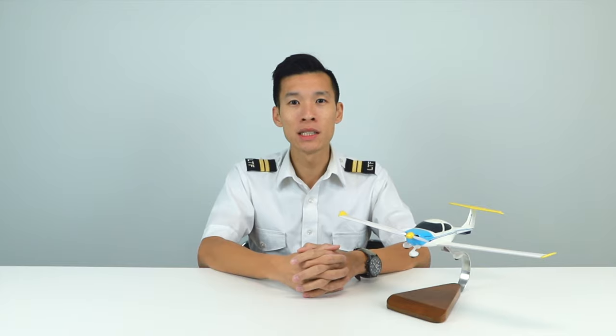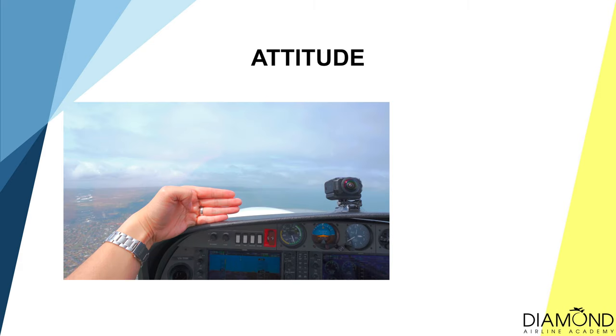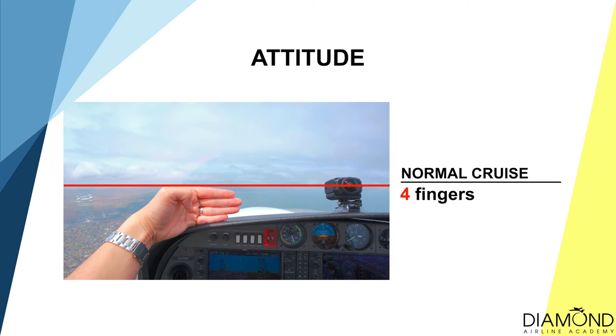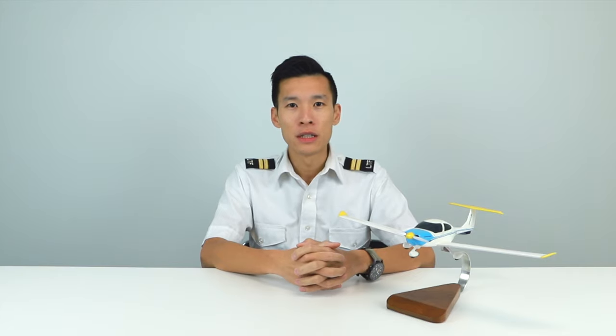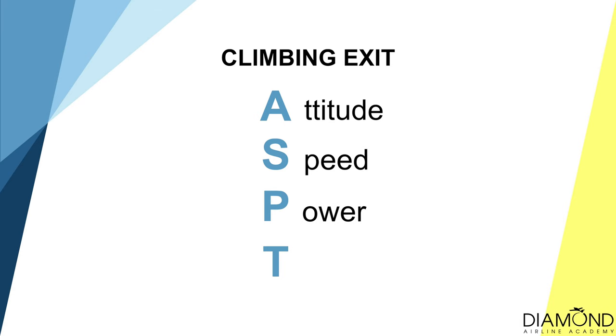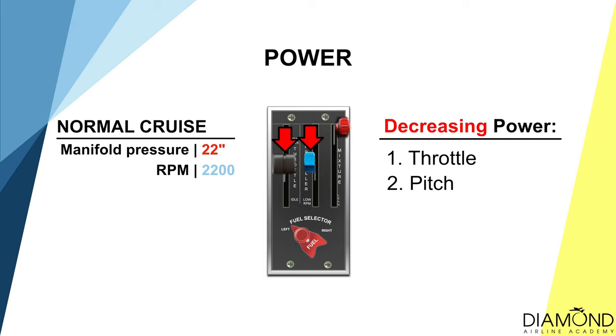Once we arrive at the nominated altitude, we level off and stop our climb or descent. The exit cycle for climb is A, S, P, T. A is Attitude — maintain four fingers normal cruise attitude by pushing the control stick to lower the nose. S is Speed — wait for speed to accelerate past about 100 knots. P is Power — reduce power to normal cruise power setting: 22 inches of manifold pressure and 2200 RPM. Then trim.